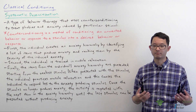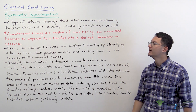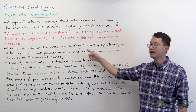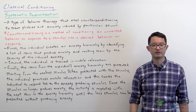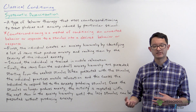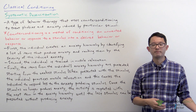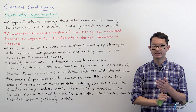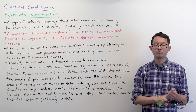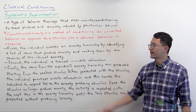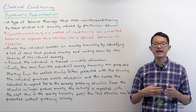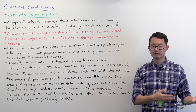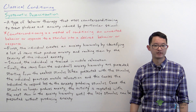Counter conditioning is based on the principles of classical conditioning and is a method of conditioning an unwanted behavior or response to a stimulus to a desired behavior or response. For example, a person who is afraid of spiders might scream when they see a spider. The stimulus is the spider and the unwanted behavior is screaming. What counter conditioning does is change the response to the spider to a desired one, so instead of screaming they might instead remain calm.